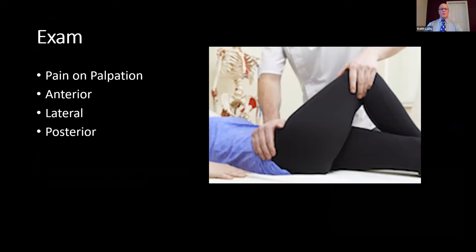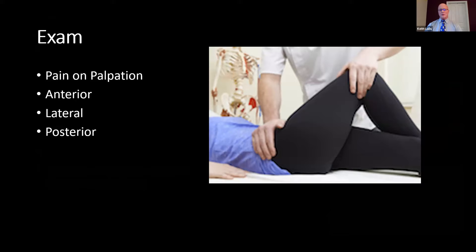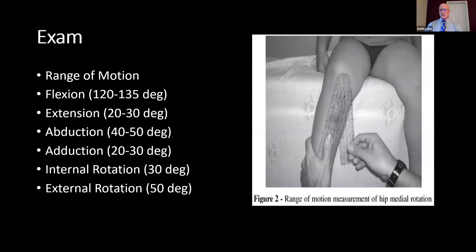As far as exam, you want to palpate first for the anterior, lateral, and posterior aspects to help determine where the pain is located. As far as range of motion, I typically want to evaluate flexion, which is typically anywhere between 120 to 135 degrees. Extension is 20 to 30 degrees. Adduction is about 20 to 30 degrees. Abduction is about 40 to 50 degrees. Internal rotation is about 30 degrees, and external rotation is about 50 degrees.